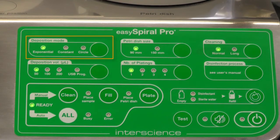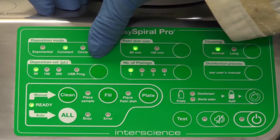There are three plating modes including exponential, circle, and uniform. In this video we will demonstrate the exponential plating mode with a 90 millimeter petri dish and 50 microliters of sample for each plating. You can change the settings according to your own experiment.